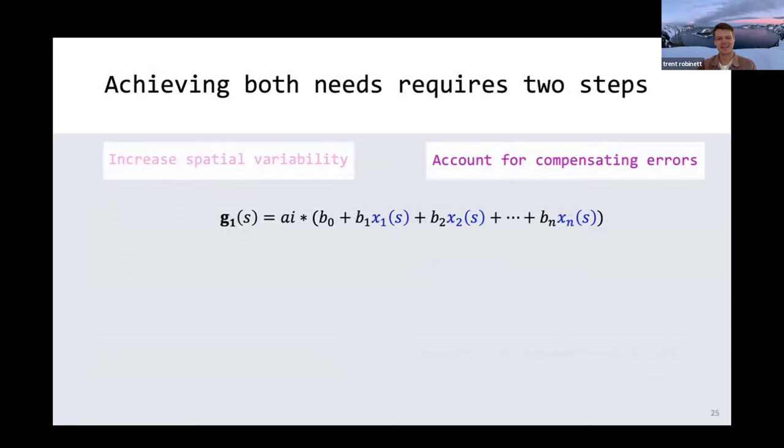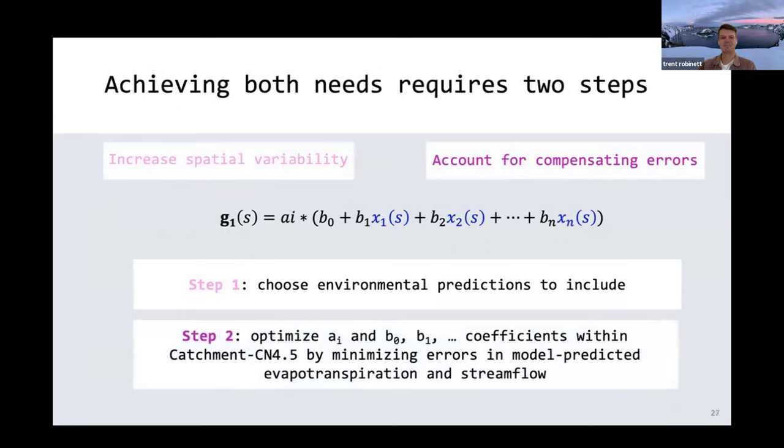To actually take this equation and put it in the land surface model of interest, we had two steps that we performed. In step one, we actually had to choose which environmental predictors do we want to use in this equation. And then in step two, we had to go about optimizing these a and b coefficients to be the best version they could. And we did that by minimizing error in the model predicted evapotranspiration and stream flow.